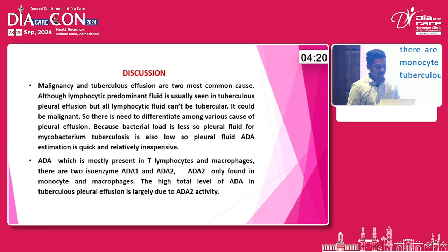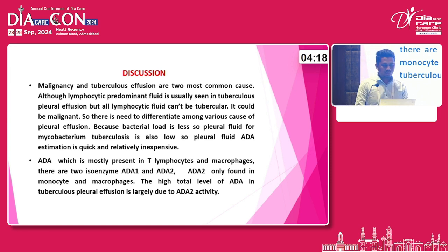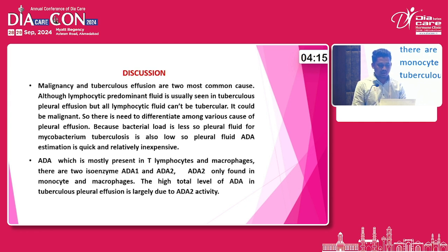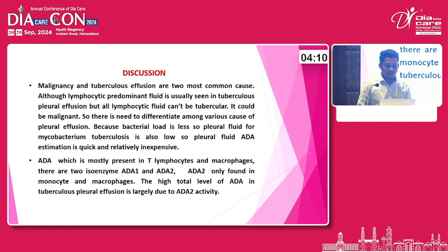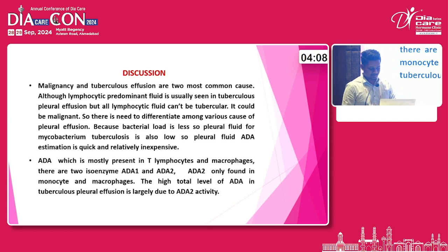ADA is mostly present in T lymphocytes and macrophages. There are two isoenzymes: ADA1 and ADA2. ADA2 is only found in monocytes and macrophages. The total level of ADA in tuberculous pleural effusion is largely due to ADA2 activity.